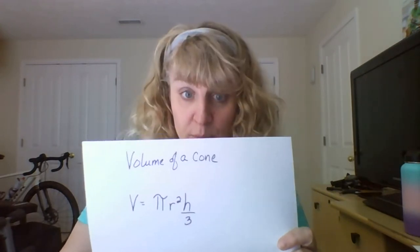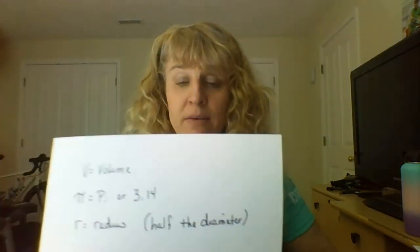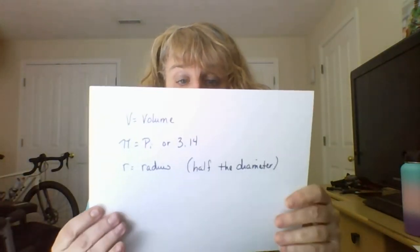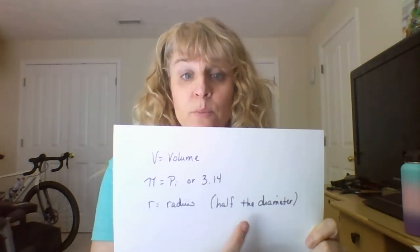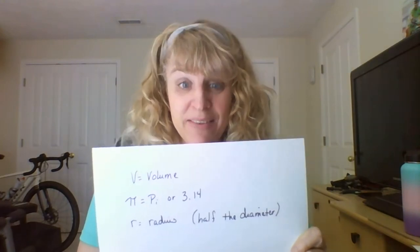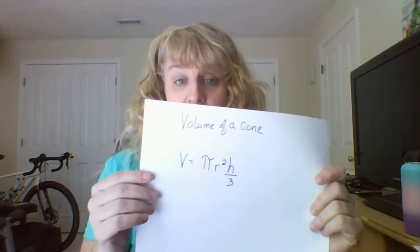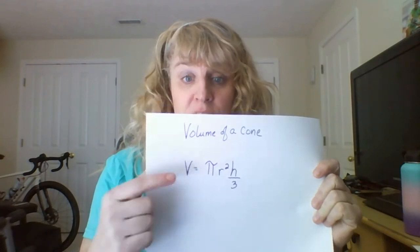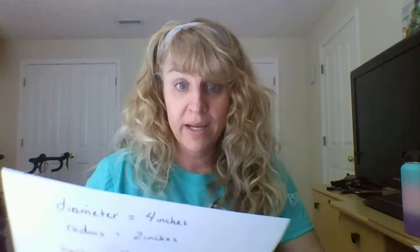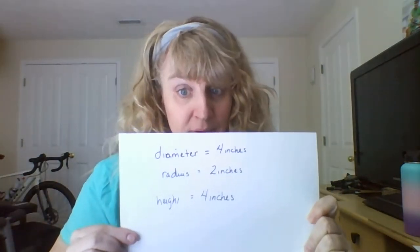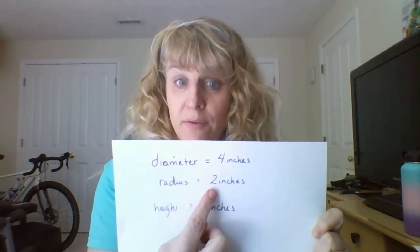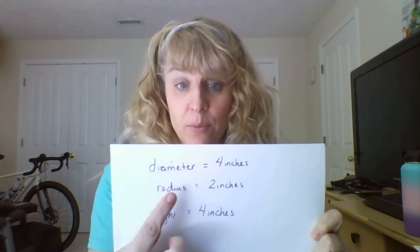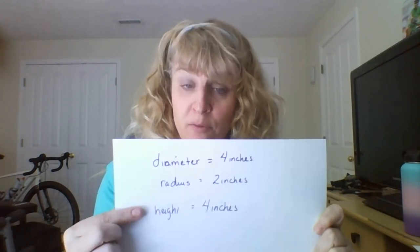Quick review: v equals volume, that symbol is pi which equals 3.14, r equals the radius which is half the diameter, and h is the height. We measured a diameter of 4 inches and a radius of 2 inches, and that cone had a height of 4 inches.